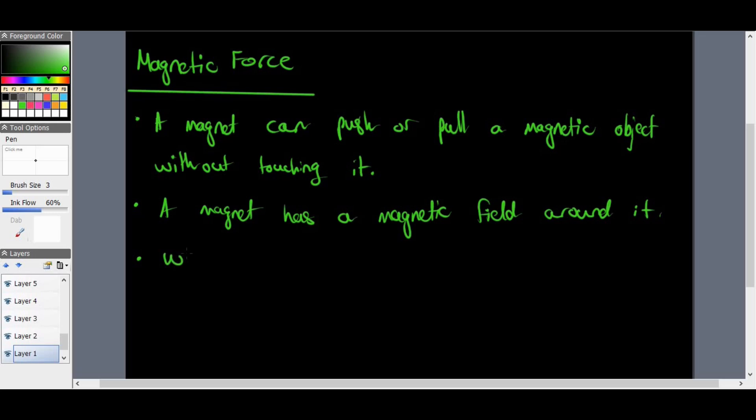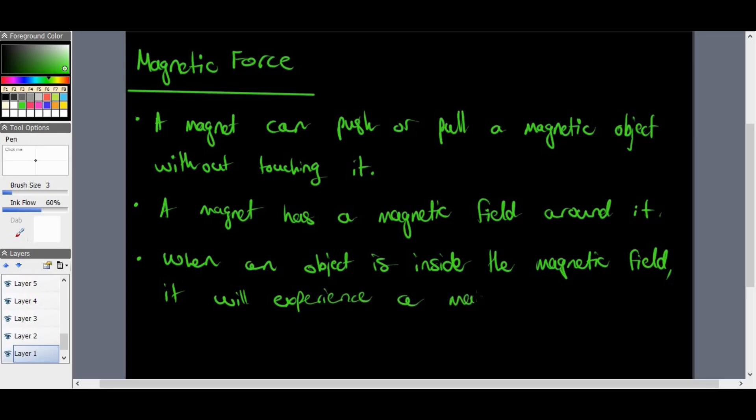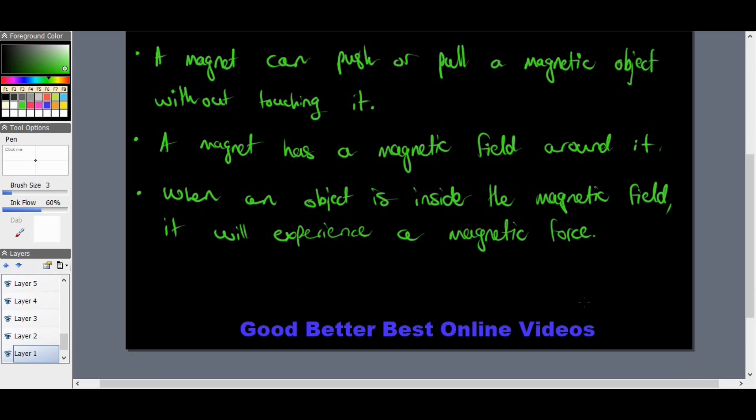We've got to add into our notes here: when an object is inside or in the magnetic field, it will experience a magnetic force. Magnetic force is strongest near a magnet and becomes weaker further away. So strongest near the magnet and weaker when it is further away.